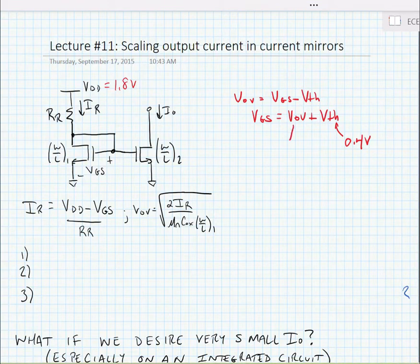And in general, we want our overdrive voltage to be somewhere in the 100 millivolts to 500 millivolts range. So for the time being, we'll say that a good overdrive voltage is somewhere around 0.25 volts or 250 millivolts.